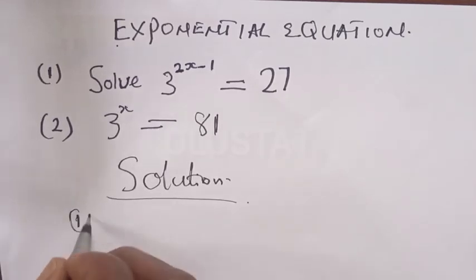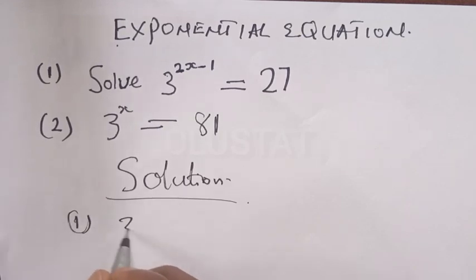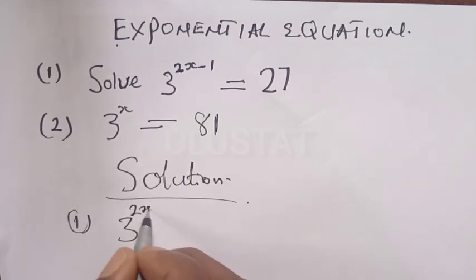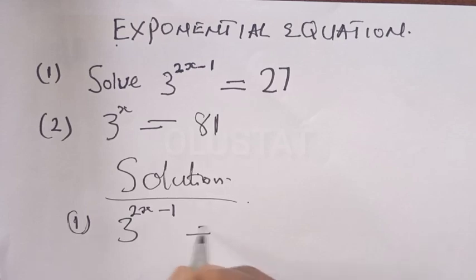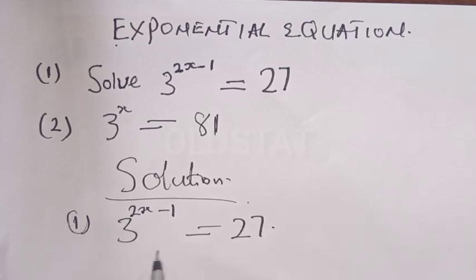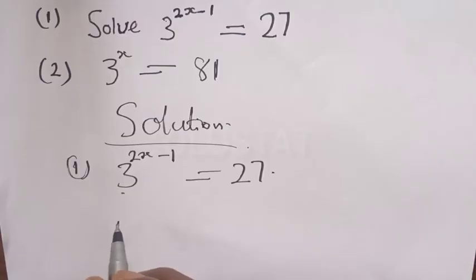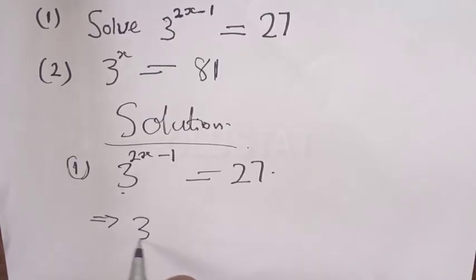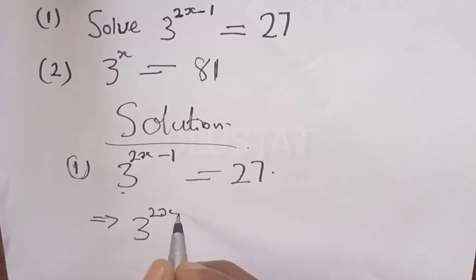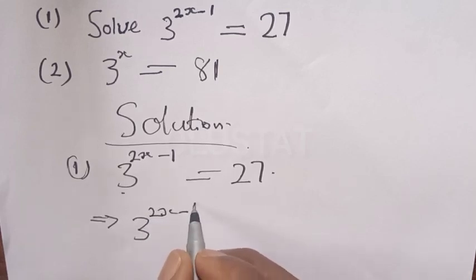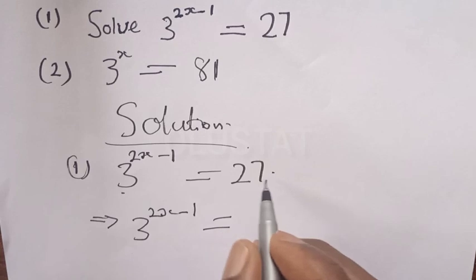Question number one: solve 3 raised to power 2x minus 1 is equal to 27. This has a base of 3, and 27 must be expressed in the same base. This implies that 3 raised to power 2x minus 1 is equal to 27, which can be expressed as 3 raised to power 3.